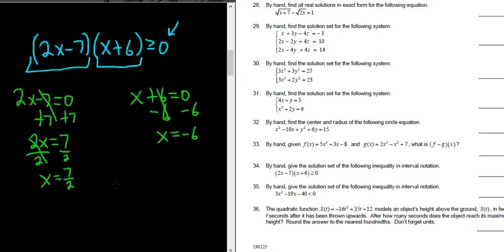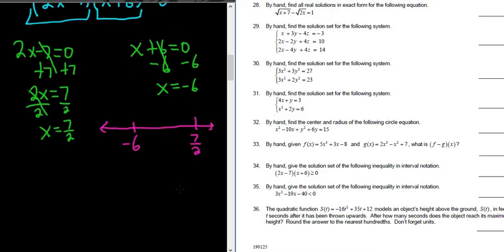Okay, so the next step in the test point method is to draw a number line. And then you plot your answers. So we have negative 6 here, and then here we have 7 halves. And so now we're supposed to pick test points. And here's how it works.